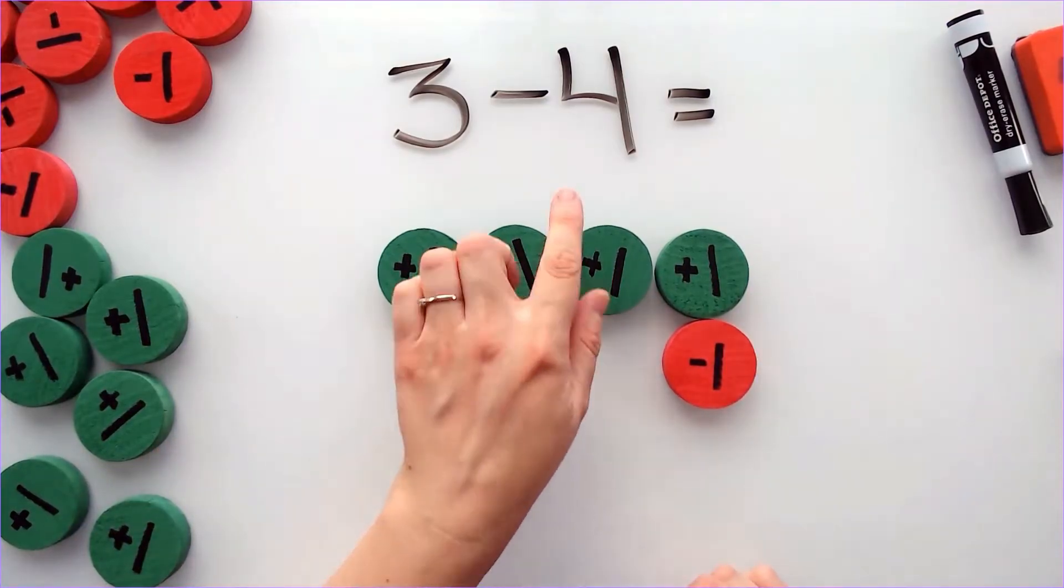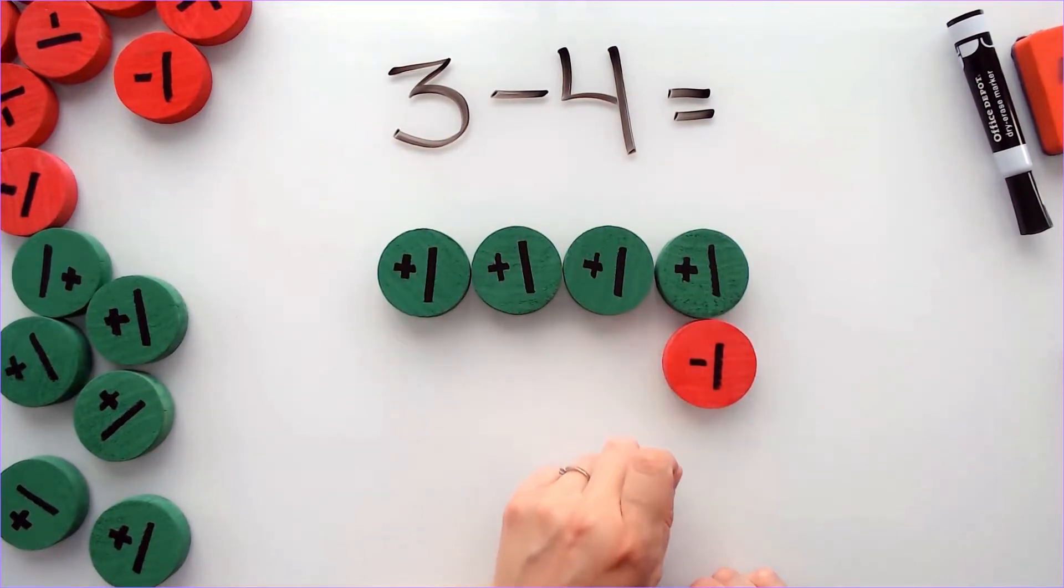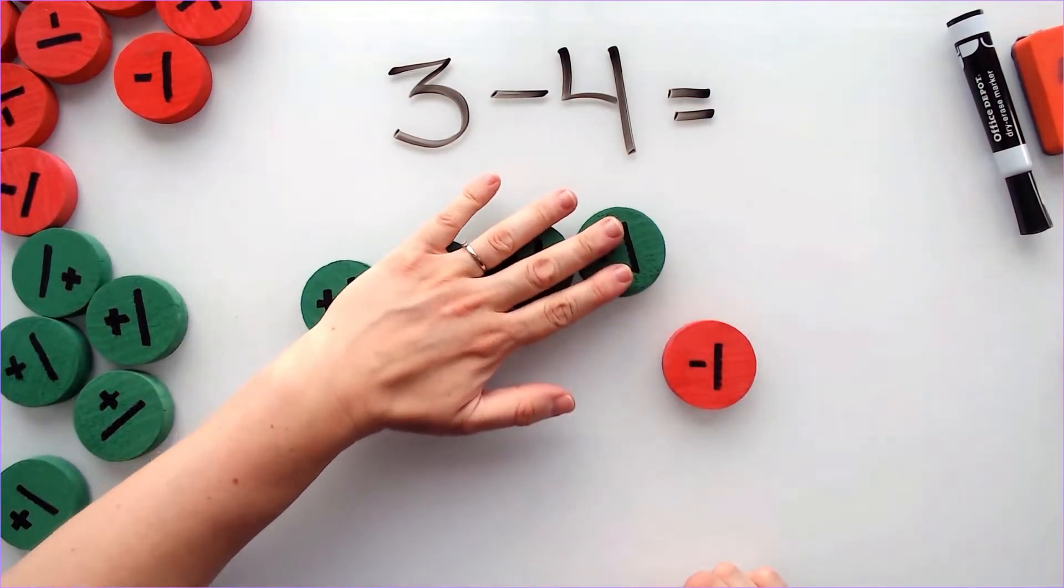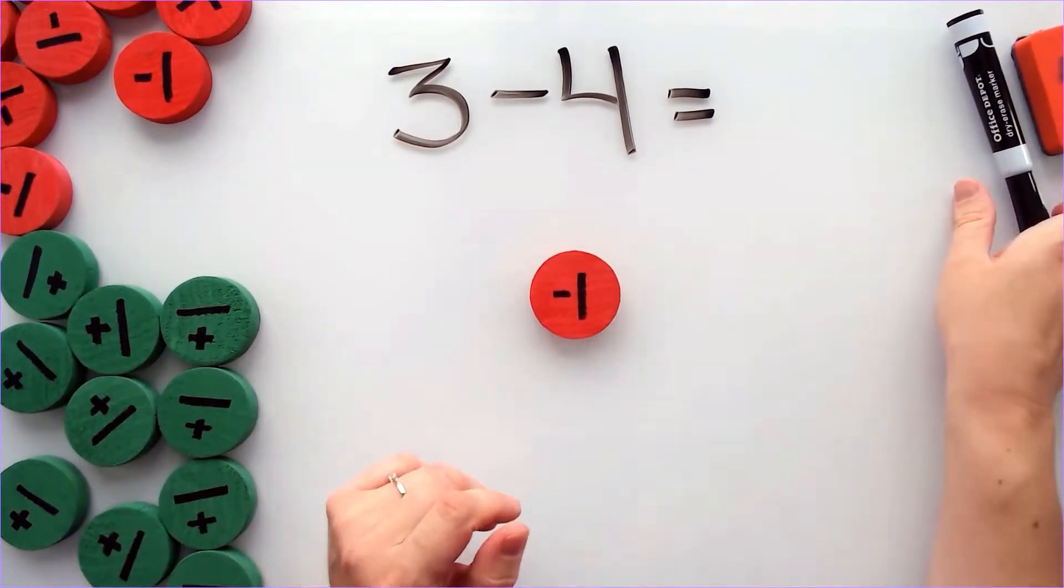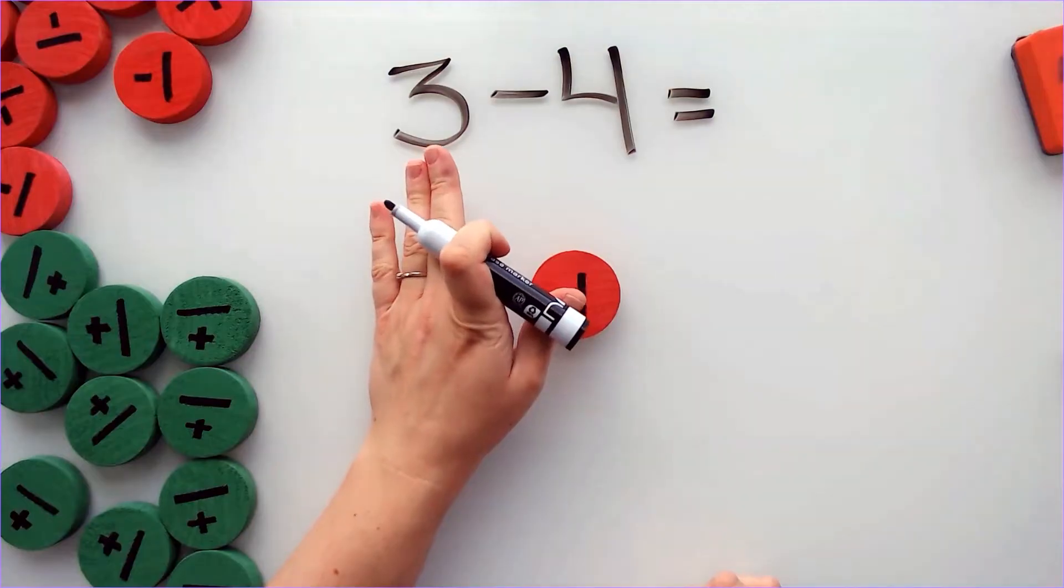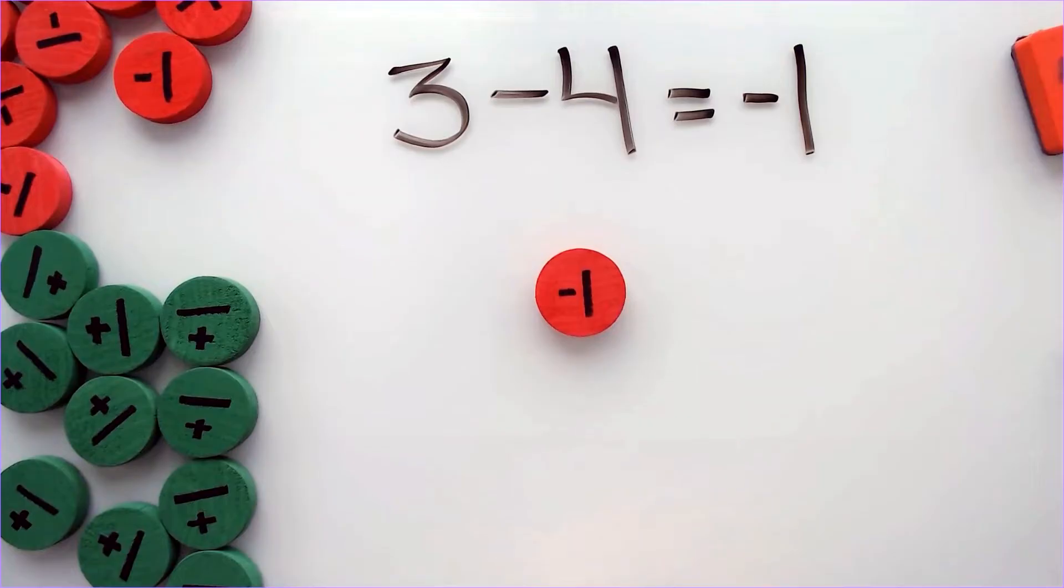I can see that I can take away 4 because I have 4 positives. So if I take away these 4, my answer is negative 1. Therefore, 3 minus 4 is equal to negative 1.